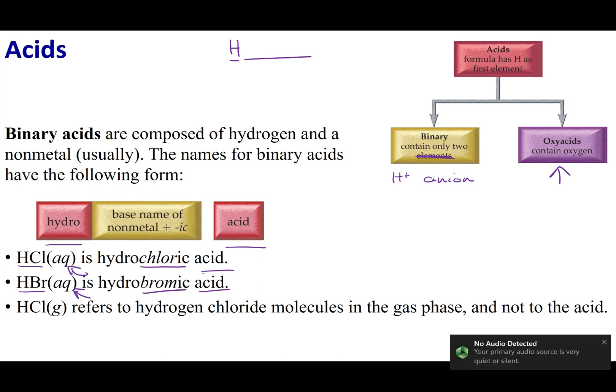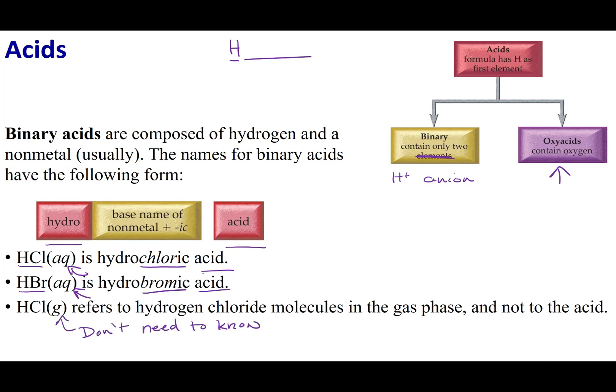Now usually when we name acids, it's going to be in solution, or it's going to be aqueous. Now there's this very odd rule, and you guys don't need to know this. And this has to do when the acid's in the gaseous form. When it's in the gaseous form, you're just going to simply go back to how you name a molecular or covalent compound. So HCl gas is really hydrogen chloride gas. Again, you don't have to worry about this very niche rule.